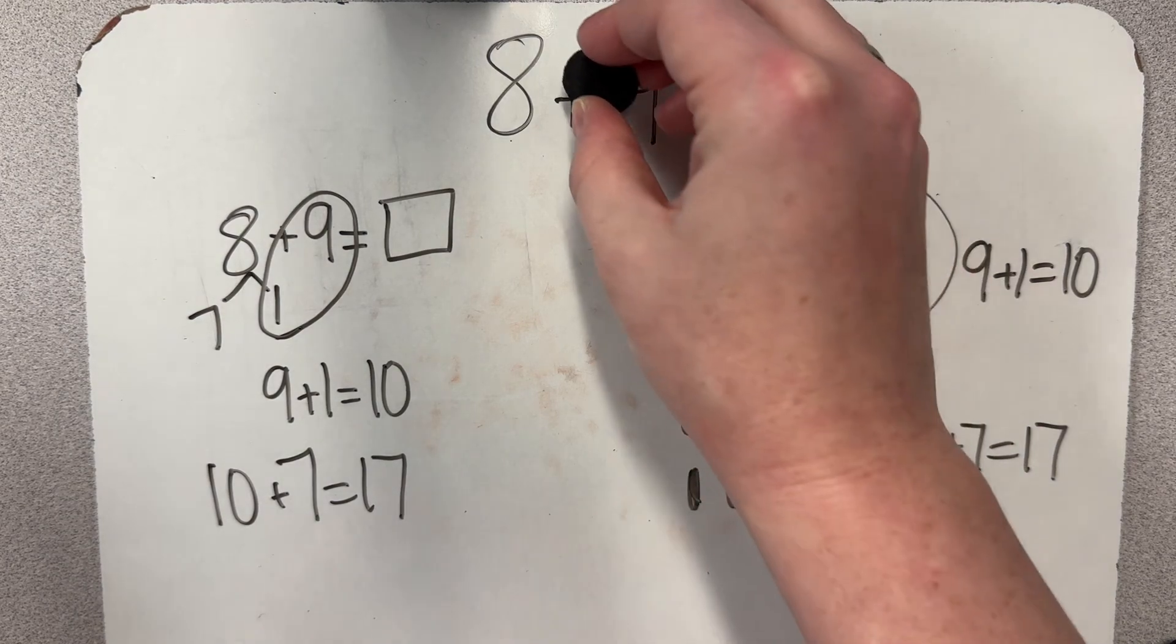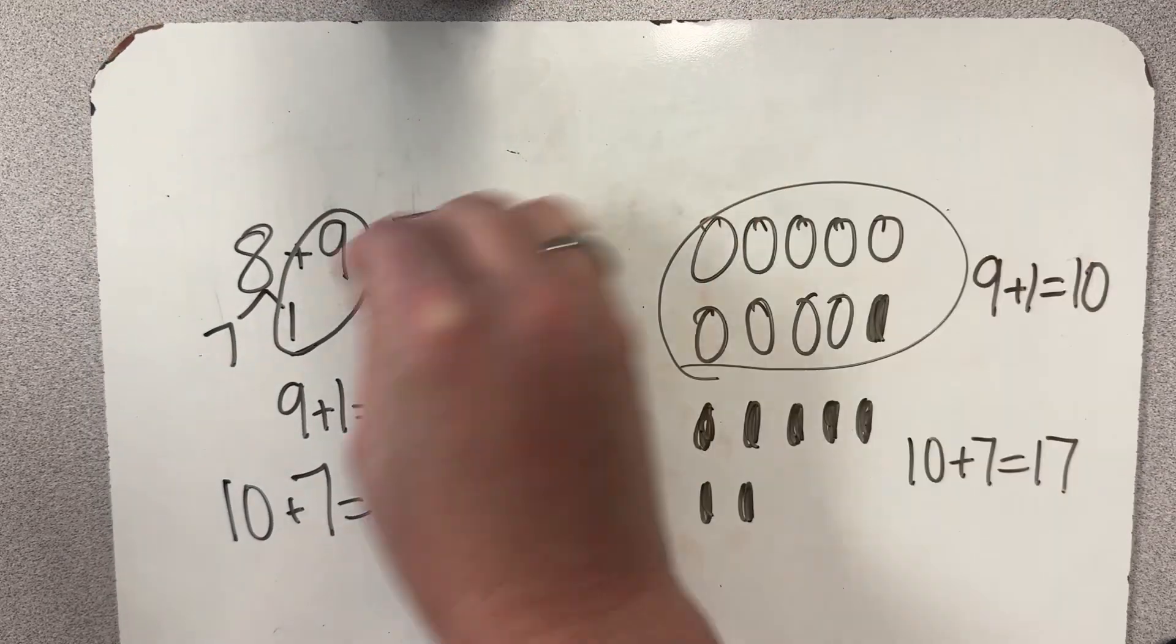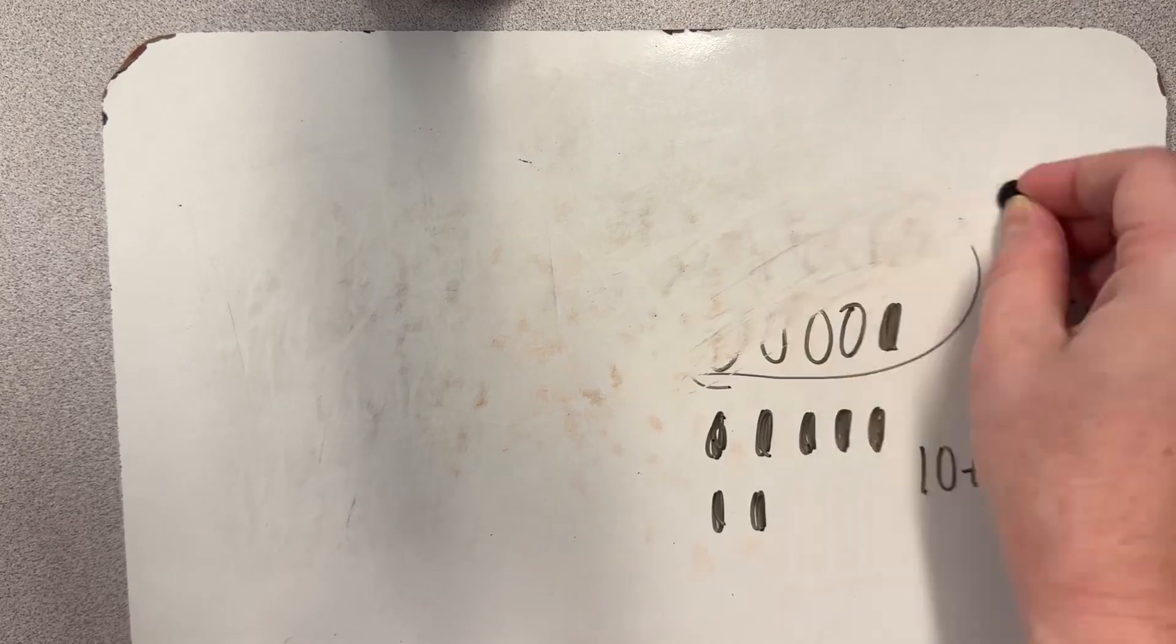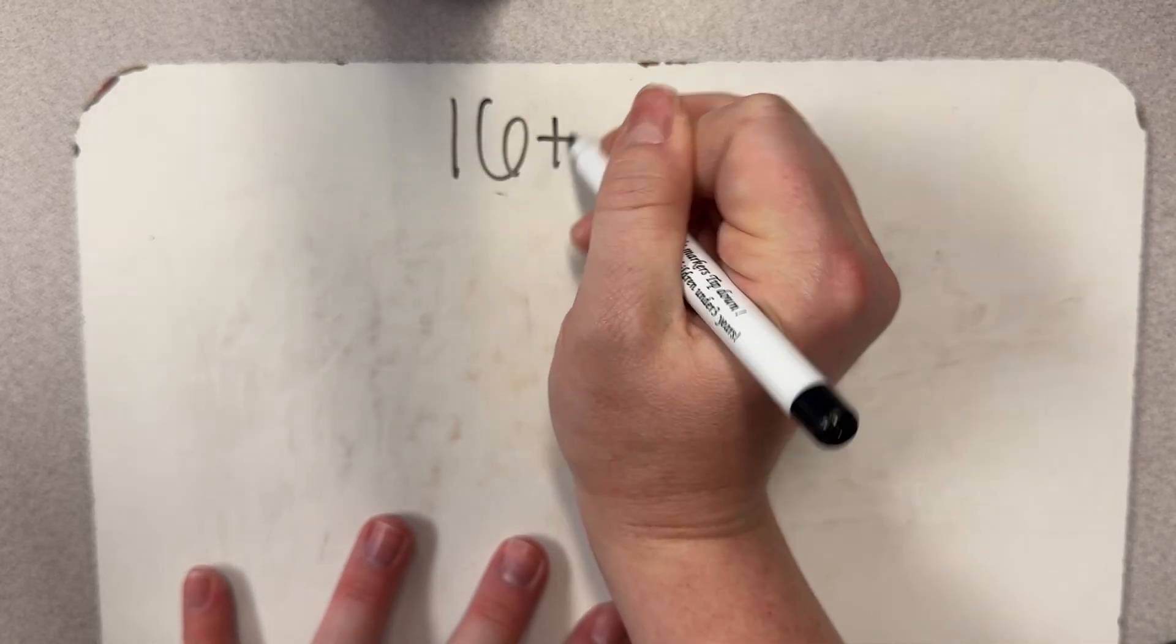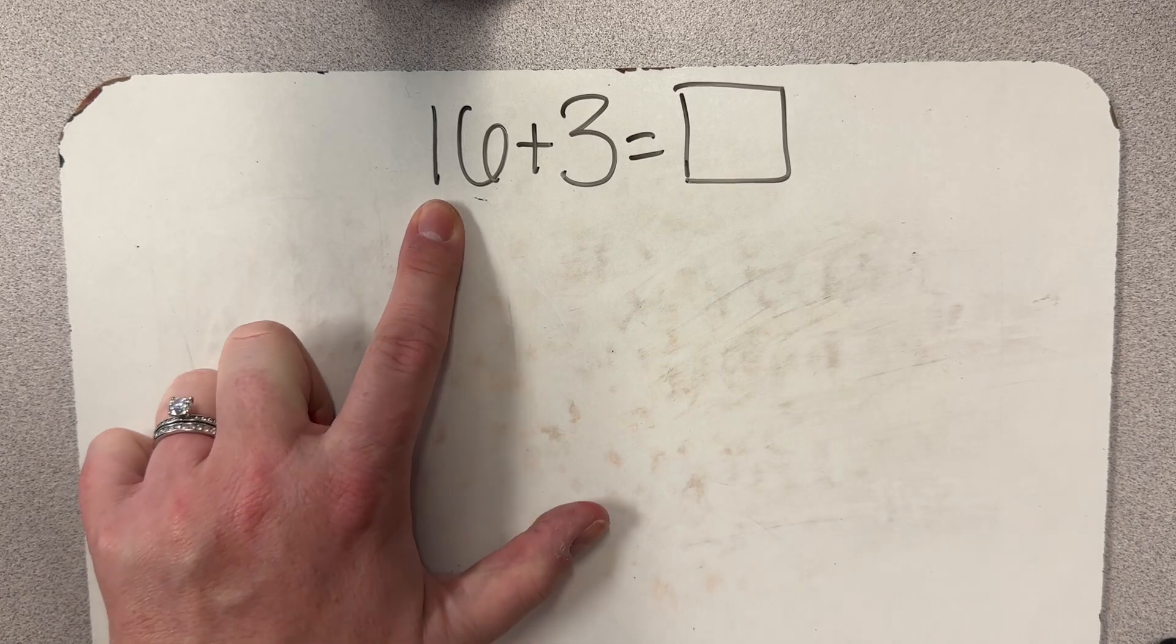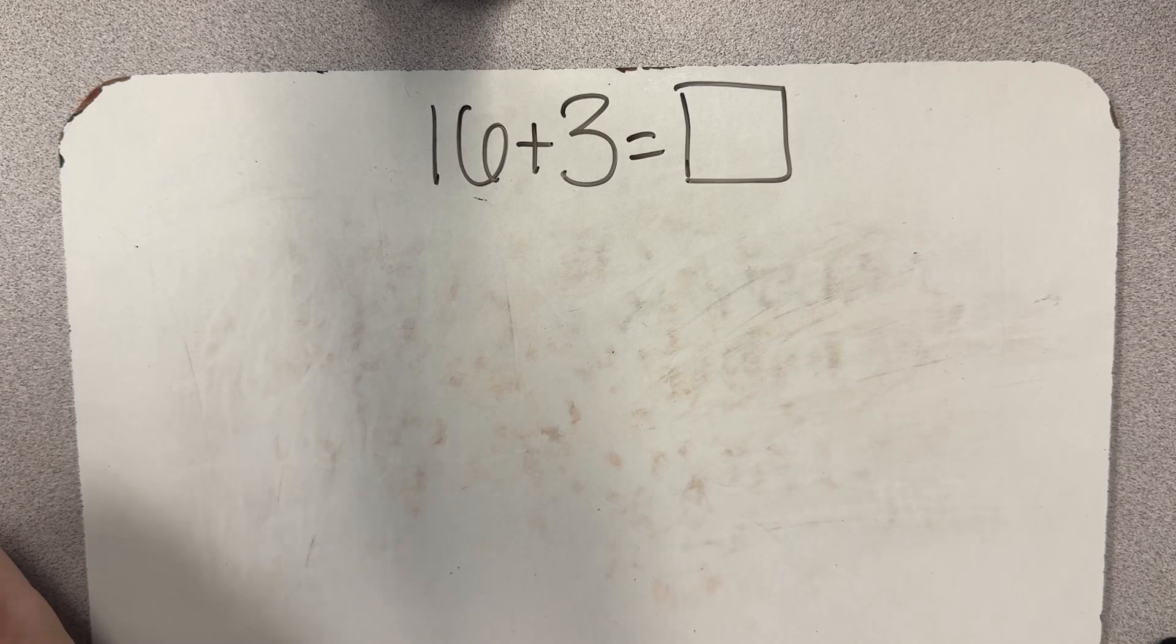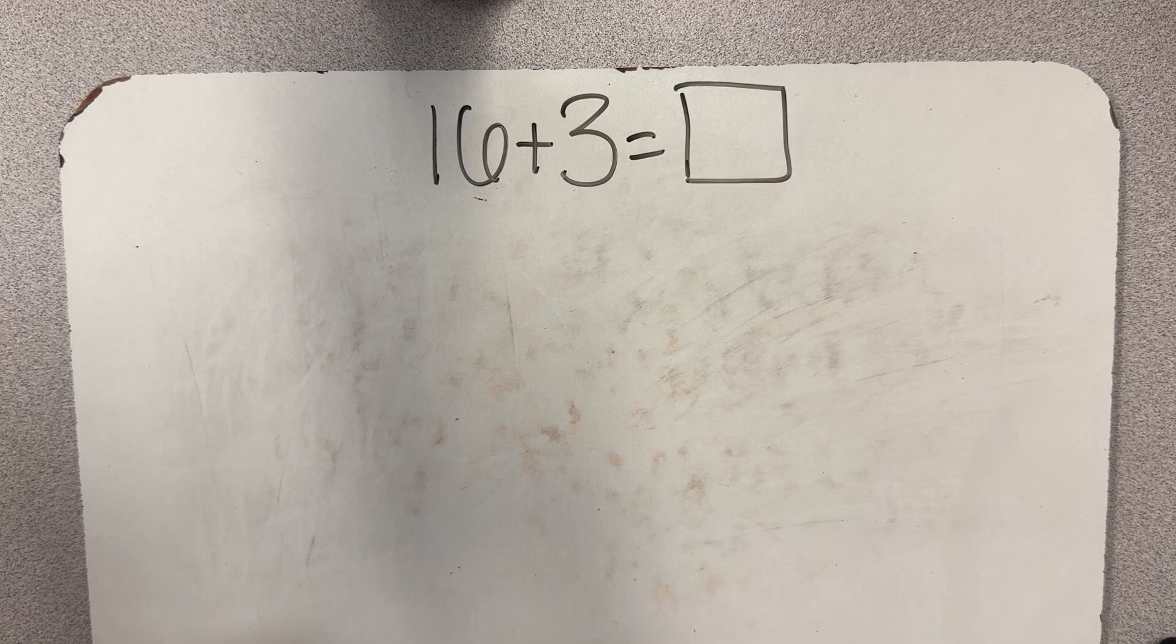Here is another problem that you can do with adding within 20. This type of problem will already have a 10 that is created, already given in that problem. So we're going to do 16 plus 3 equals our unknown. So with this one, I already have a 10. I'm going to work on building the 16 first, then adding those three ones. I always want to keep it in a group of 10 when I can because that is an easy way for us to add and count.